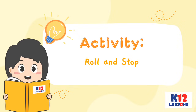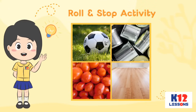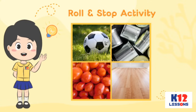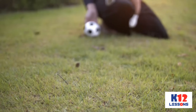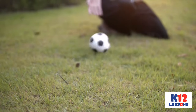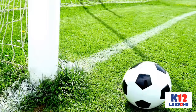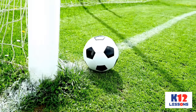Activity: Roll and Stop. In this activity, you will need any round object available at home, like a ball, a tin can, or a tomato on the floor. Get the ball or any available round object and put it on the floor. Push the ball gently to allow it to roll on the floor. Observe the movement of the ball.